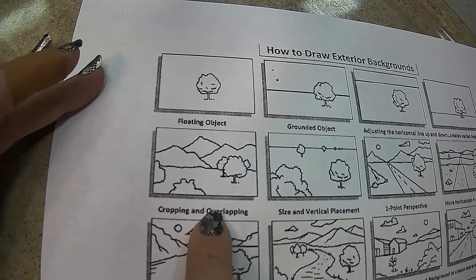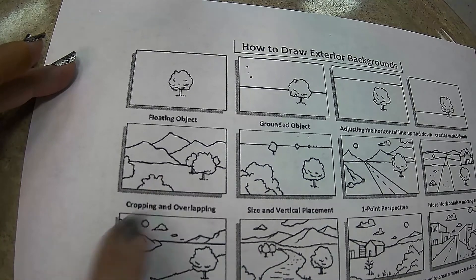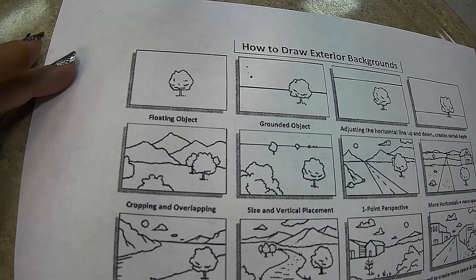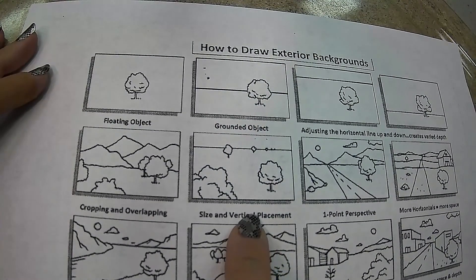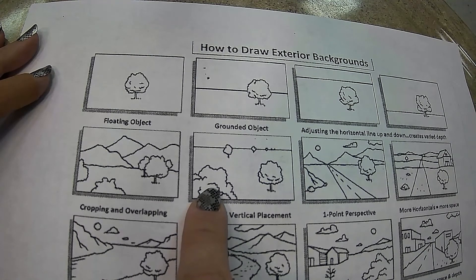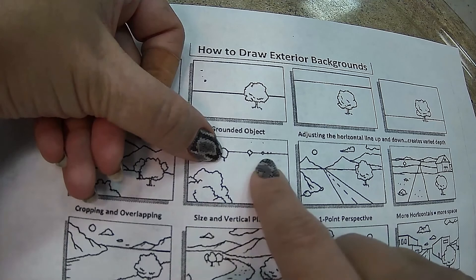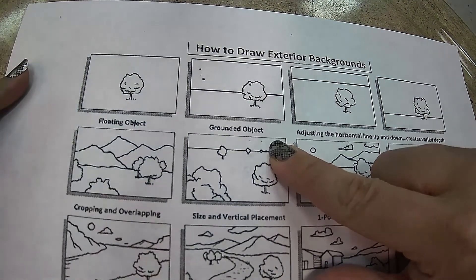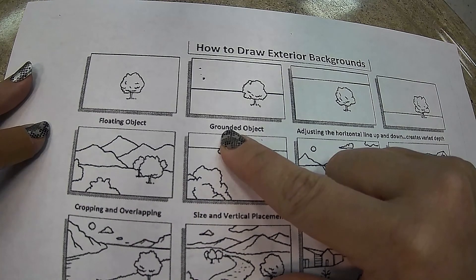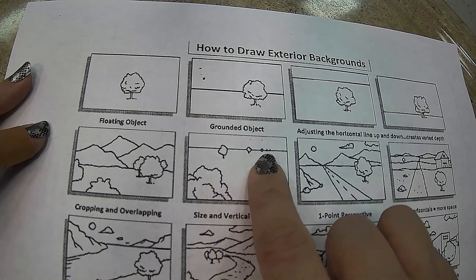Cropping and overlapping are really important. We want things to overlap to show that some things are further away — hiding behind other things — because this is closer and that is farther away. We also want it to look like a snapshot, not like we've centered everything perfectly. Cropping means we see parts of objects, not whole objects. Vertical placement for size means if something is closer to the bottom of the paper, it appears closer to the viewer.